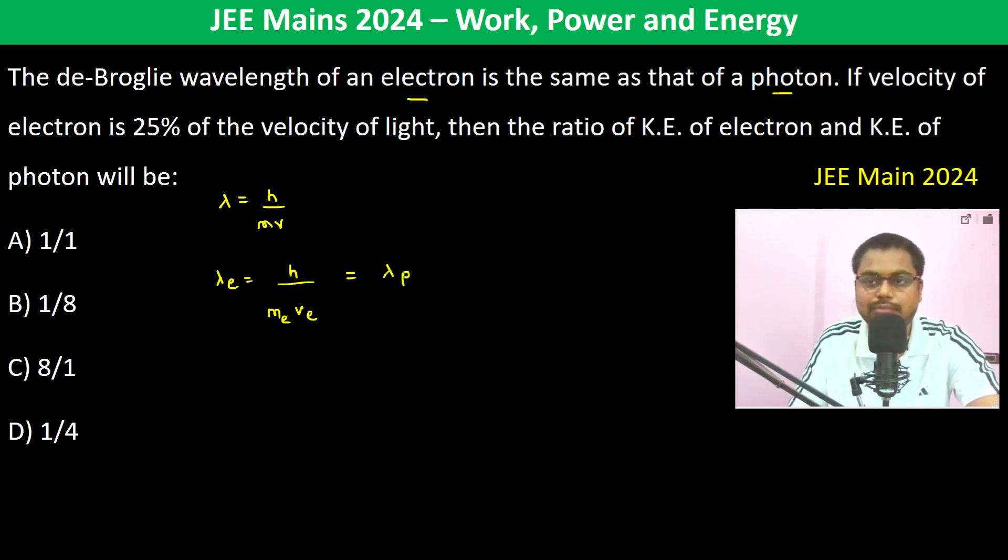If velocity of electron is 25% of the velocity of light, then the ratio of kinetic energy of electron and kinetic energy of photon will be what? Velocity of electron equals 25 by 100 into 3 times 10 to the power 8 meters per second. This is the first and second equation.